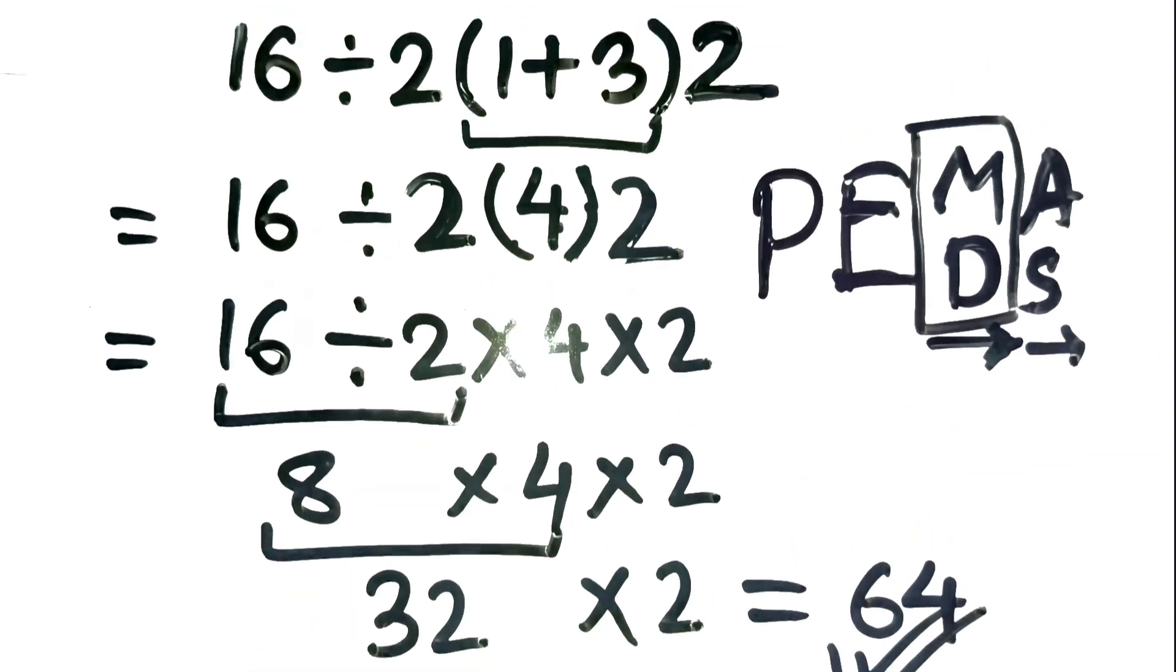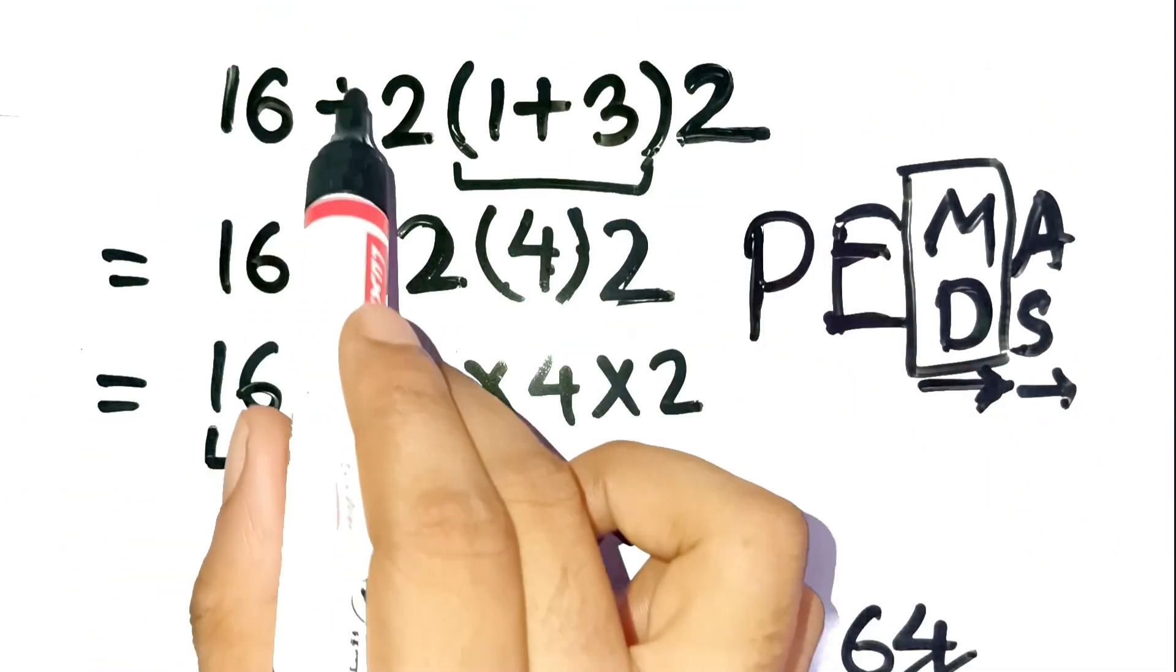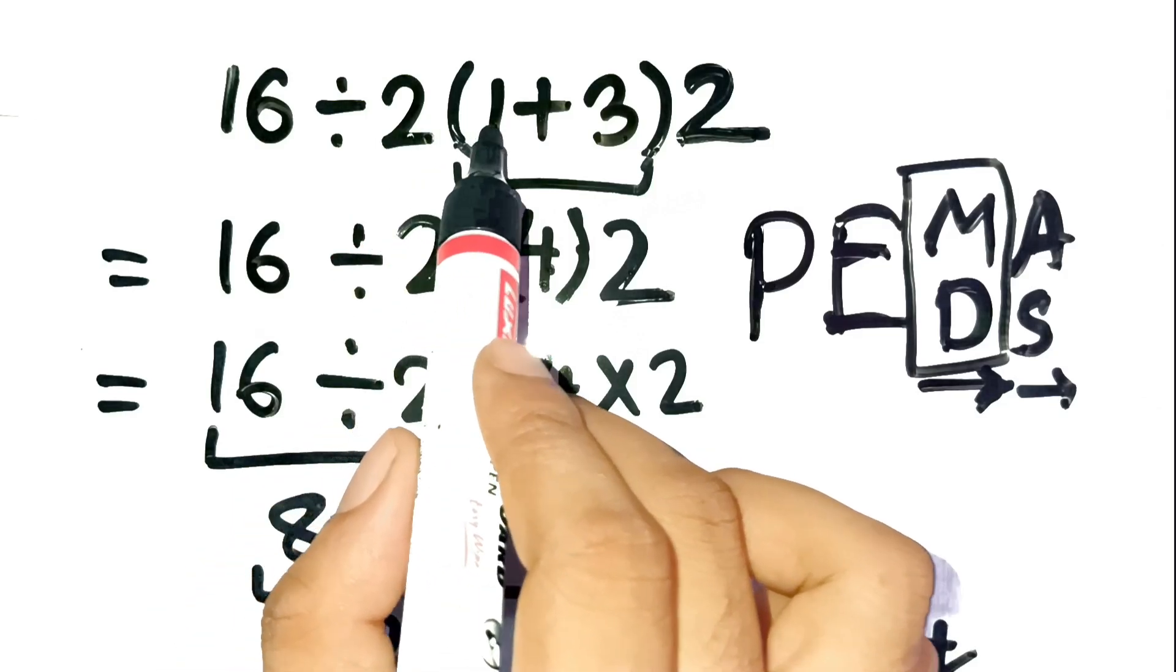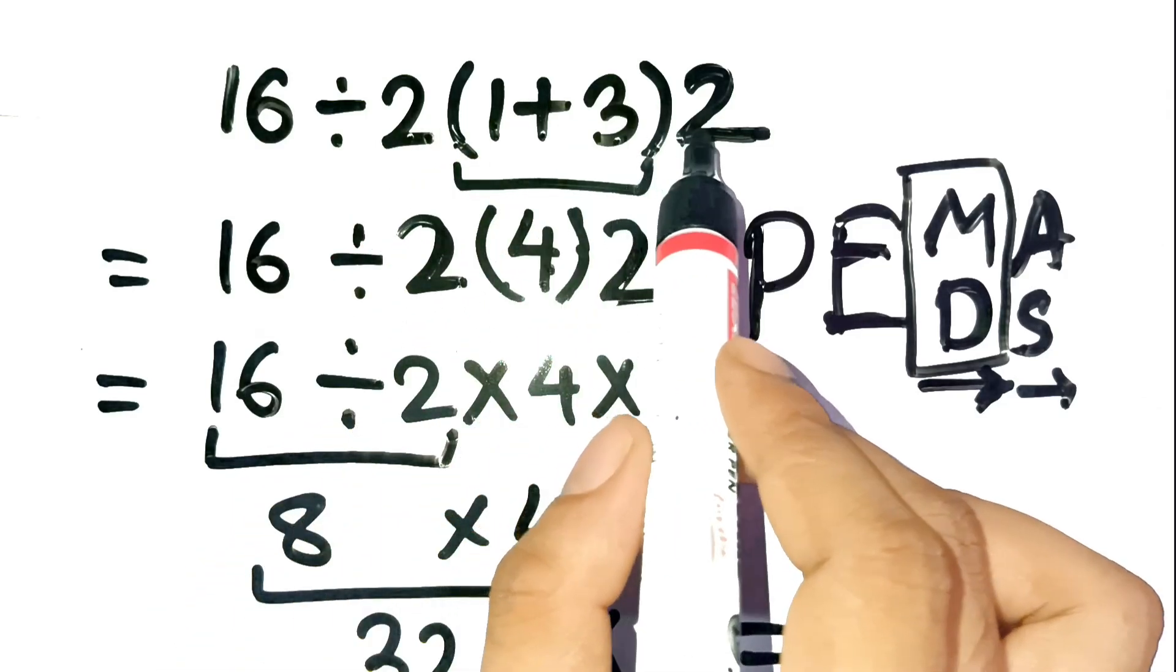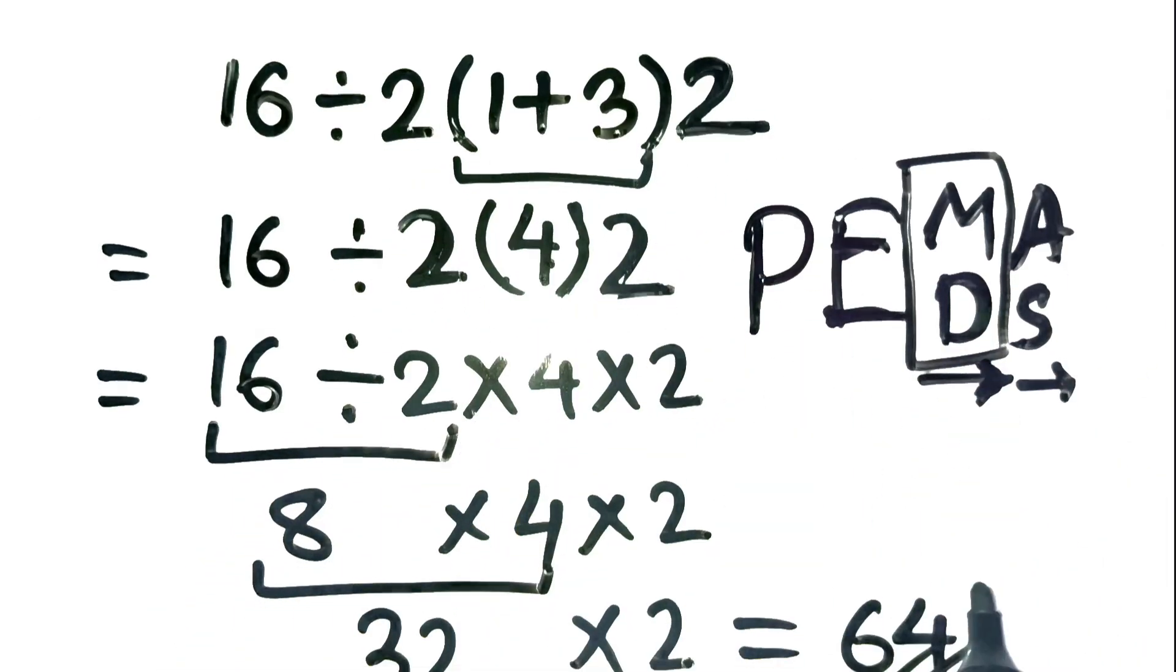If you don't believe it, try typing it exactly like that into your calculator. 16 divided by 2, open parenthesis, 1 plus 3, close parenthesis, 2, and you'll see it gives 64.